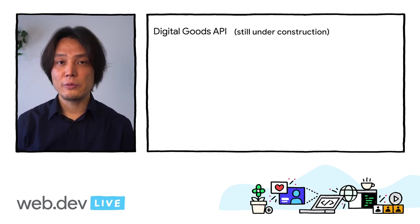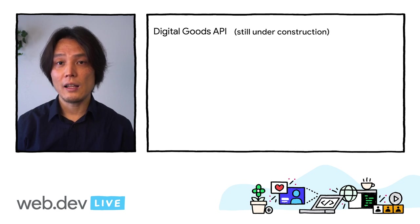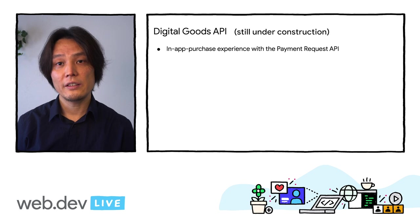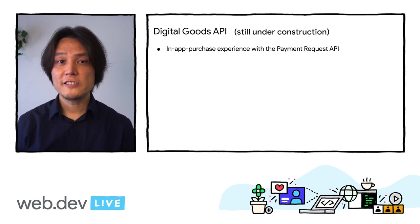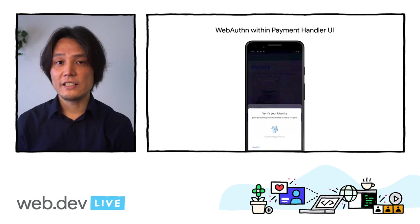Another experimental feature I'm excited about is the Digital Goods API. It is designed to be used together with the Payment Request API to allow web apps to invoke billing flows provided by native app stores, enabling in-app purchase experiences that are difficult to achieve on the web today. For example, the Digital Goods API can be used to enable payments for apps in the Play Store that use Trusted Web Activities.